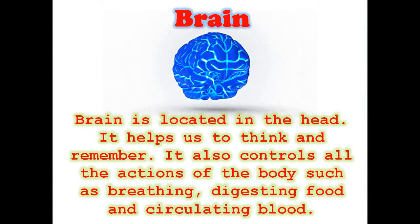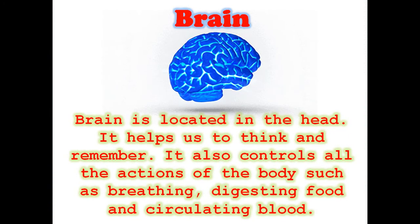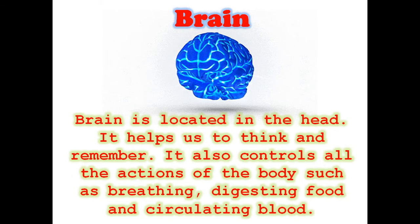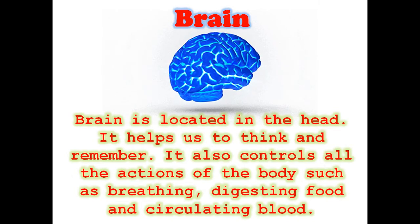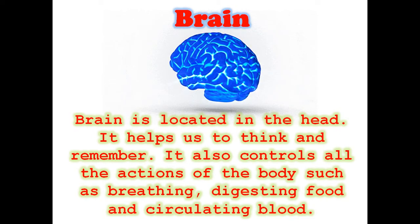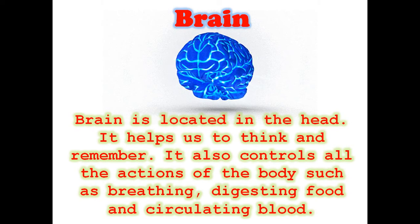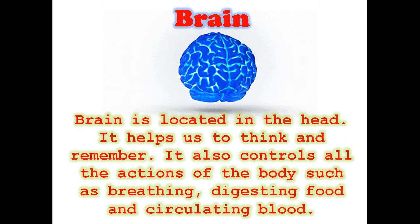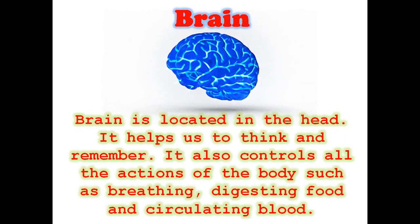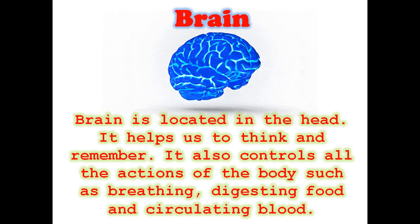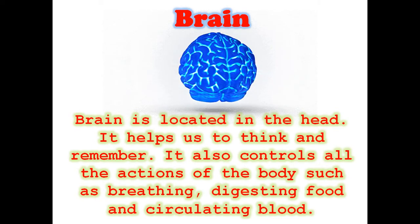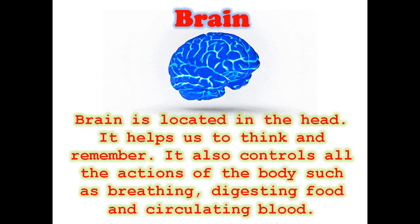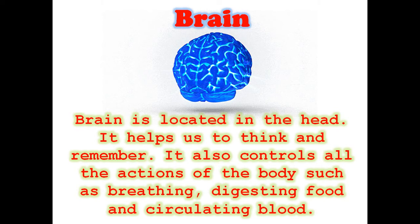Brain: the brain is located in the head. It helps us to think and remember. It also controls all the actions of the body such as breathing, digesting food, and circulating blood. The brain is very important and it is protected by the skull. Children, you know whenever your father or mother drives, they always wear a helmet.